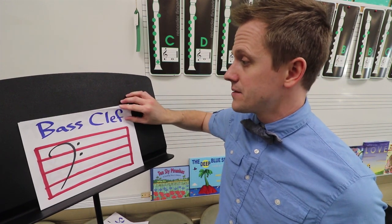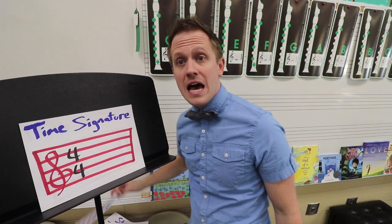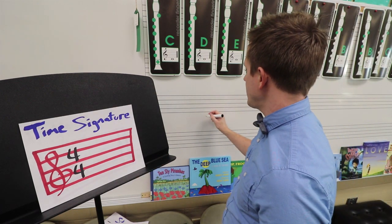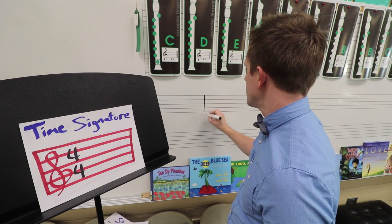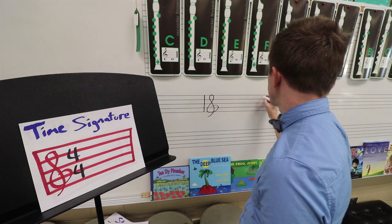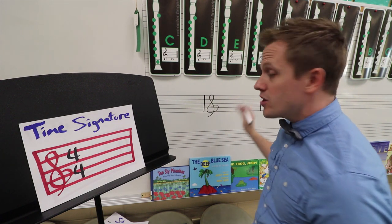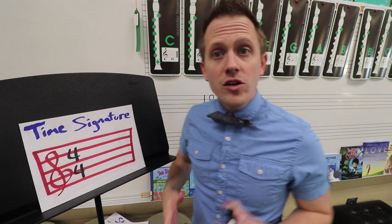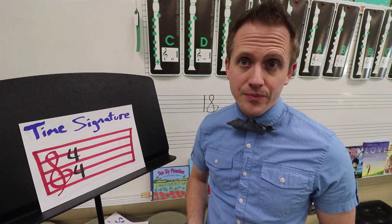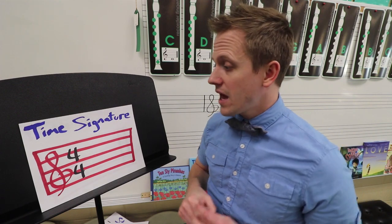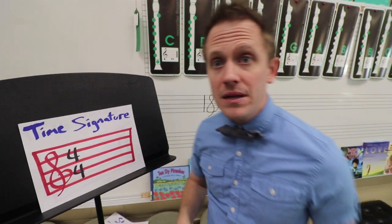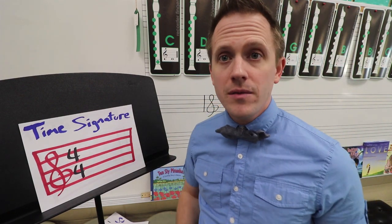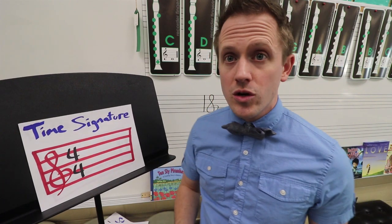Up next, let's talk about a time signature. Imagine you already have a staff, some bar lines, and a treble clef. Remember that the space between bar lines is called a measure — you need to know how many beats fit inside of a measure, and that's what the time signature tells you. The top number tells you how many beats will fit in that measure, and the bottom number tells you what kind of rhythm gets the beat.